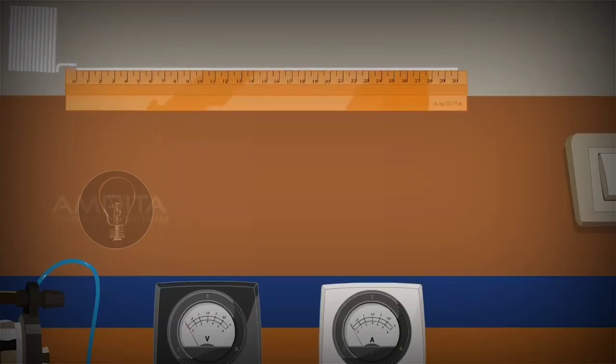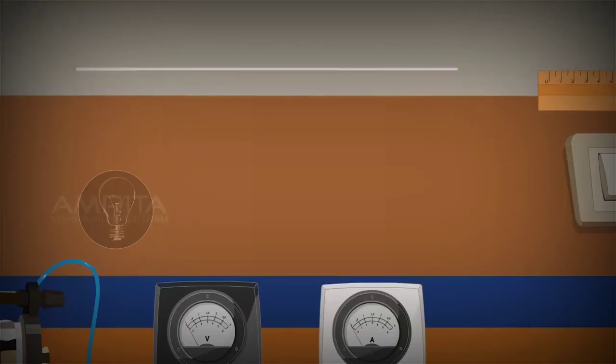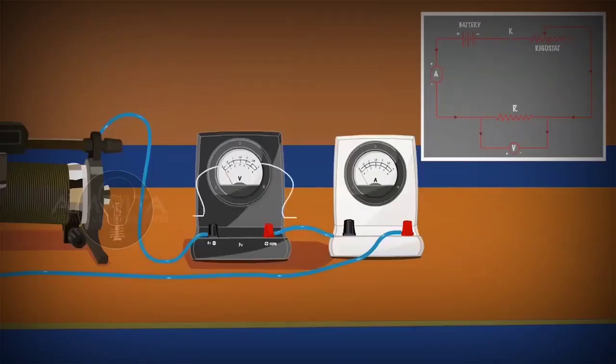Now take a resistance wire, stretch it and measure its length using a meter scale and cut the wire at the given point. Connect it in parallel to the terminals of the voltmeter, i.e. positive to negative. The connection is completed.